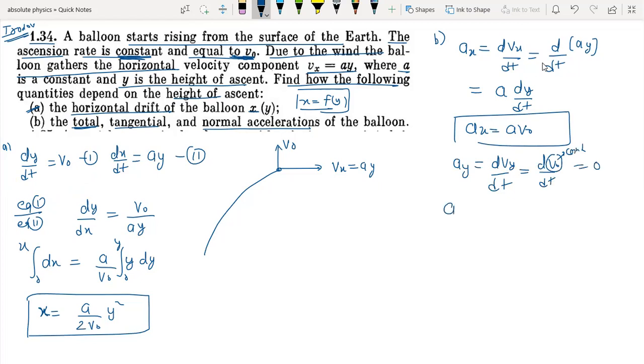So the net acceleration a will be ax i cap plus ay j cap. If we find the magnitude, a total equals square root of ax square plus ay square. This is equal to square root of a square v0 square plus zero, so av0 is the total acceleration.